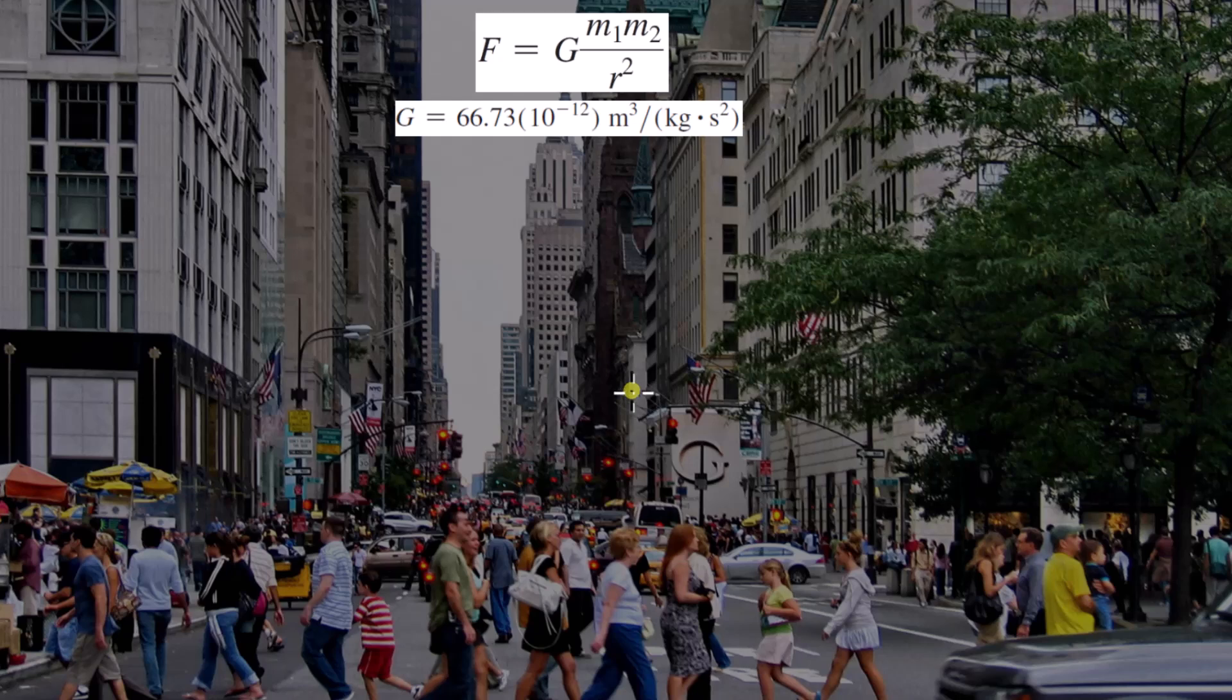So, we can look at Earth as just this non-rotating sphere that has a constant density, that has a mass we'll say is M-E. So, we'll say M-E is equal to M-2, and the mass of an object on Earth is equal to M.